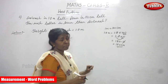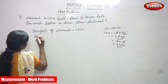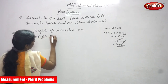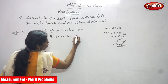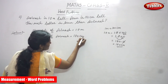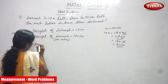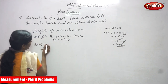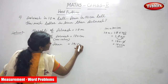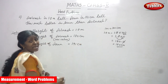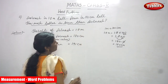Now all the units are the same. Height of Avinash — that is the new value — is 180 centimeters. Height of Arun is equal to 191 centimeters. Now the units are the same. Now you ask what they are asking: how much taller is Arun than Avinash?